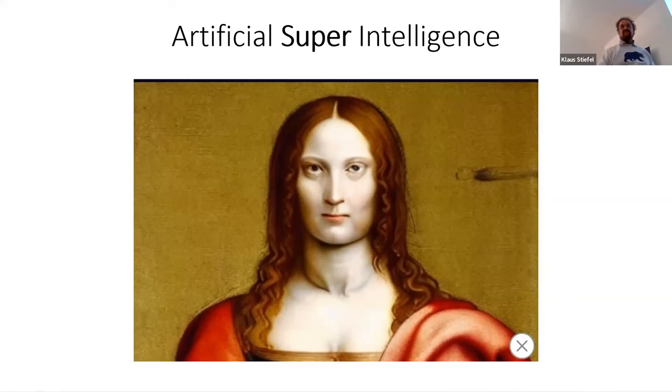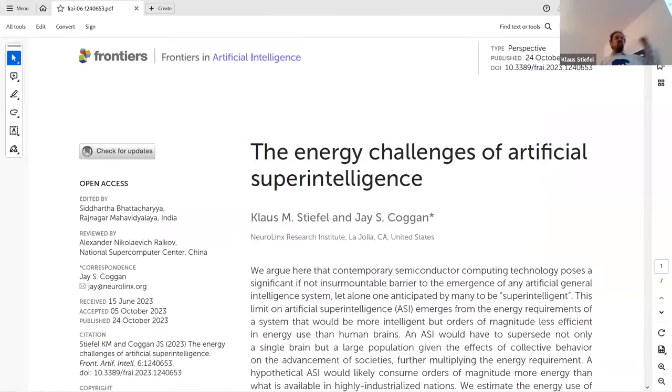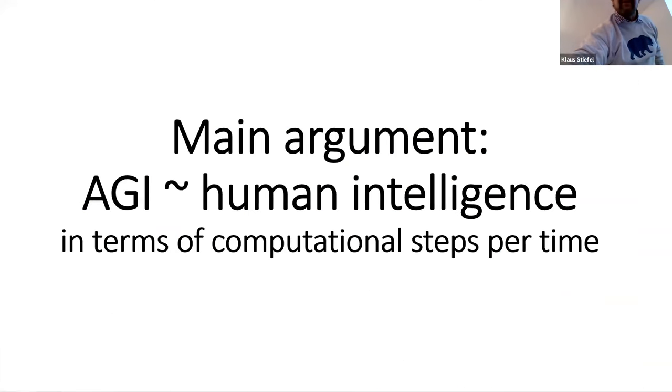Our arguments in this paper, which I published with my friend and colleague, Jake Hogan, who was up until very recently with the blue brain project. We argue that we are not going to get there for the following reason, but essentially the number of computational steps per time, which an artificial general intelligence will have to carry out.